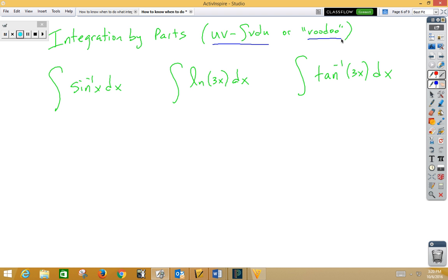You use voodoo when you're integrating inverse trig functions. You use voodoo when you're integrating natural log problems. You use voodoo when you do inverse trig functions. Notice these last two are u substitutions, so be careful about that.